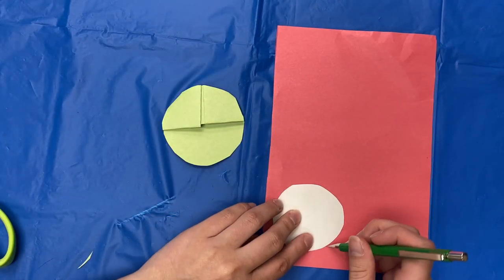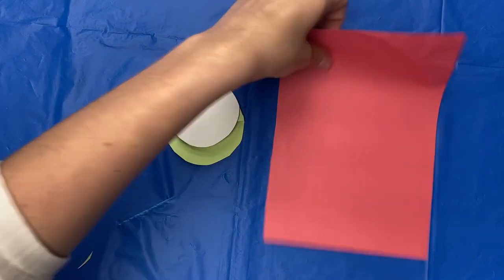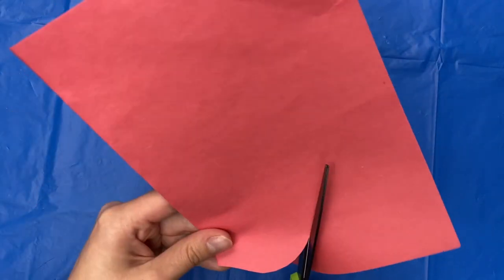Then cut a circle out of your red paper slightly smaller than your white circle.